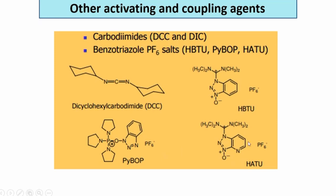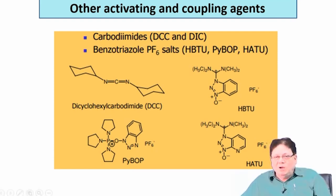There are many factors to consider when choosing a coupling agent - it is not necessarily always between amino acids. Sometimes you have to couple an aromatic amine with an acid, and then you might have to use HBTU or HATU.